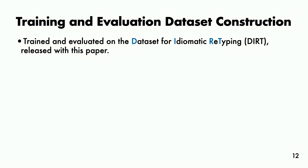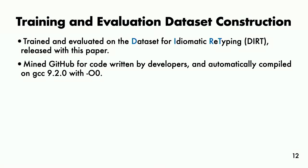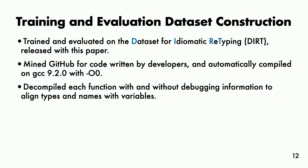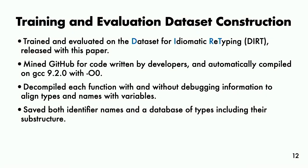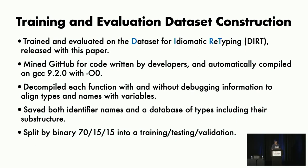To train and evaluate this, we needed a data set. We collected and released the data set for idiomatic retyping, which we also call DIRT. This data set was automatically generated from code written by developers and published on GitHub. We compile it with GCC 9.2 with optimizations turned off. Each function was also decompiled with Hexrays with and without debugging information. This allows us to align variables in the code. We saved identifier names and a database of types, which include things like name and substructure of the type. For training, we split these by binary. This prevents functions from one binary ending up in both the training and the testing data set.